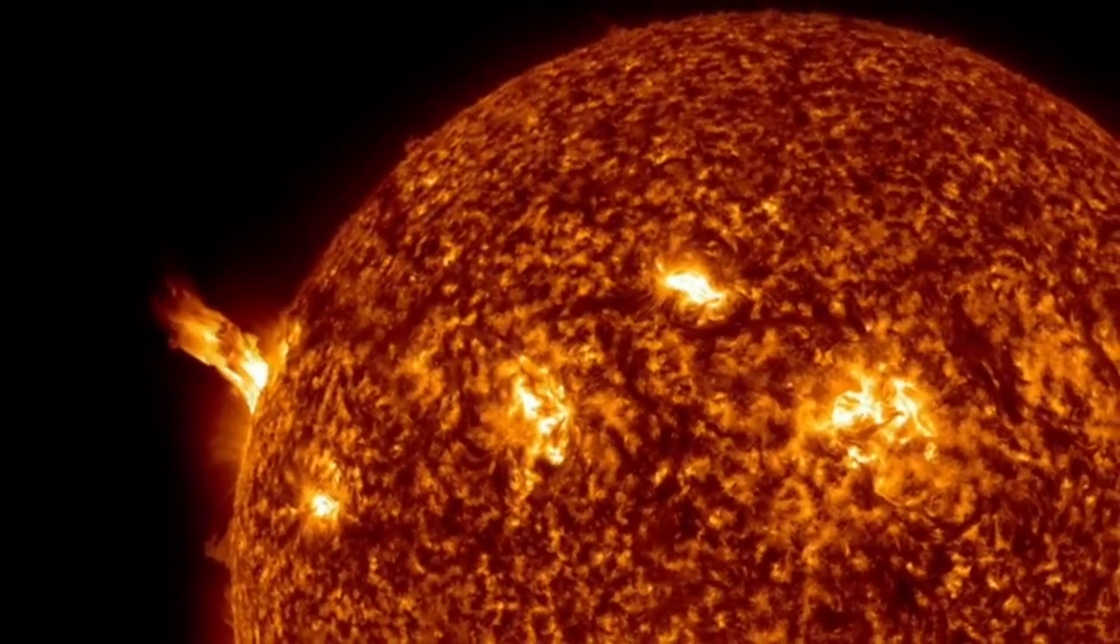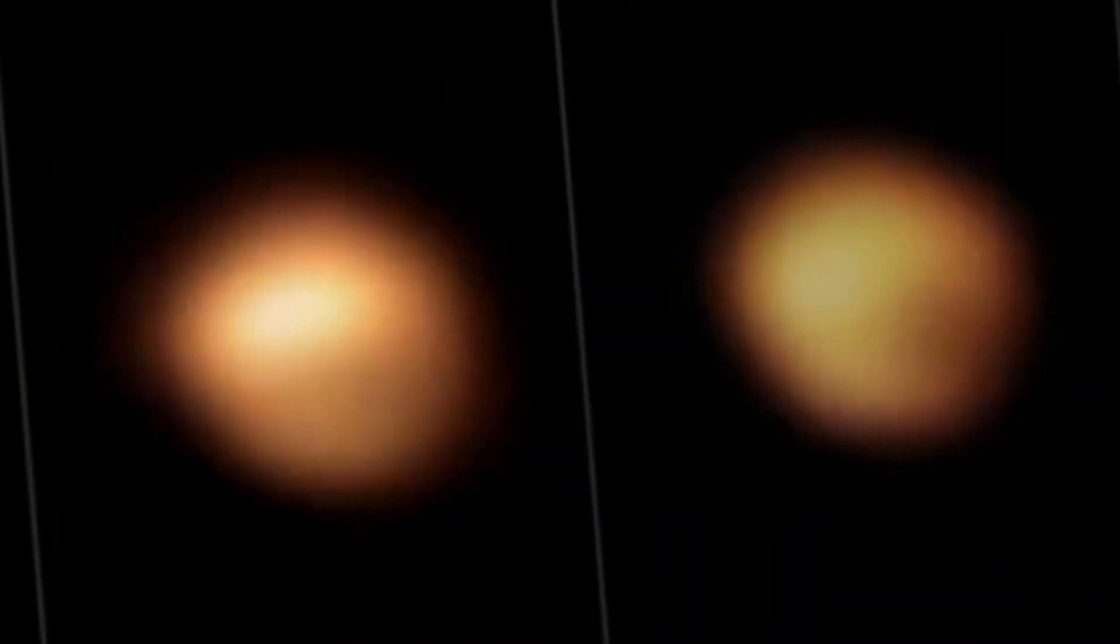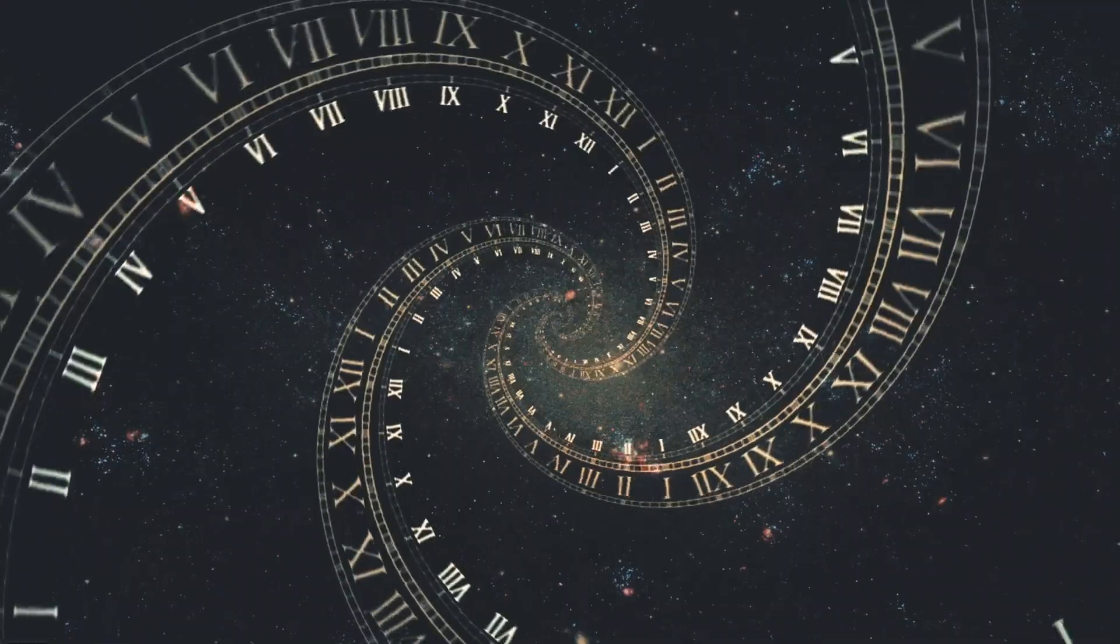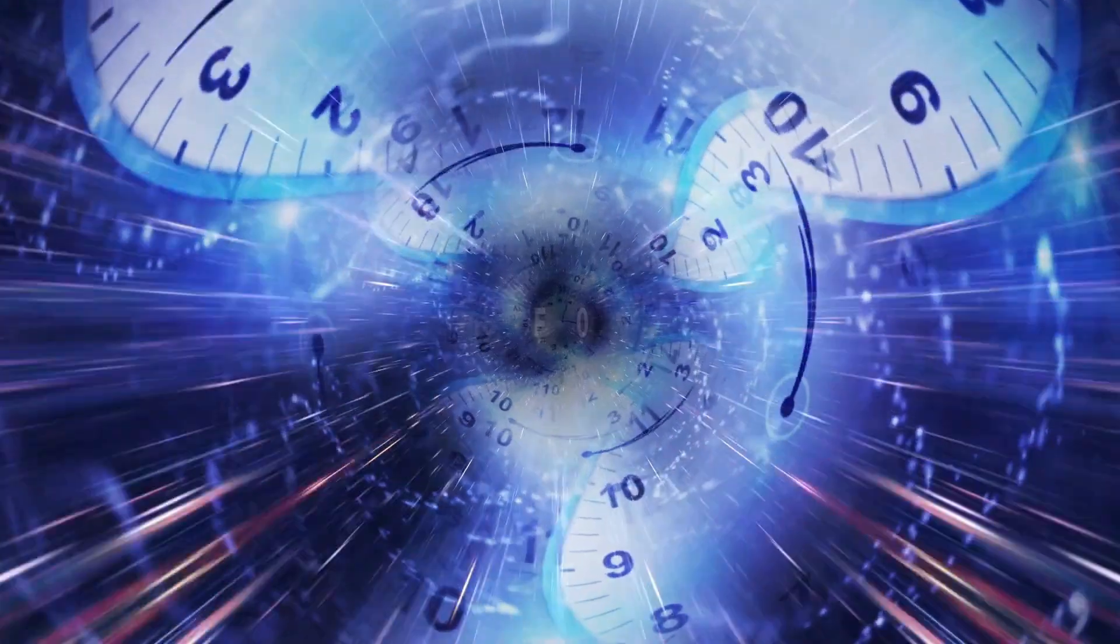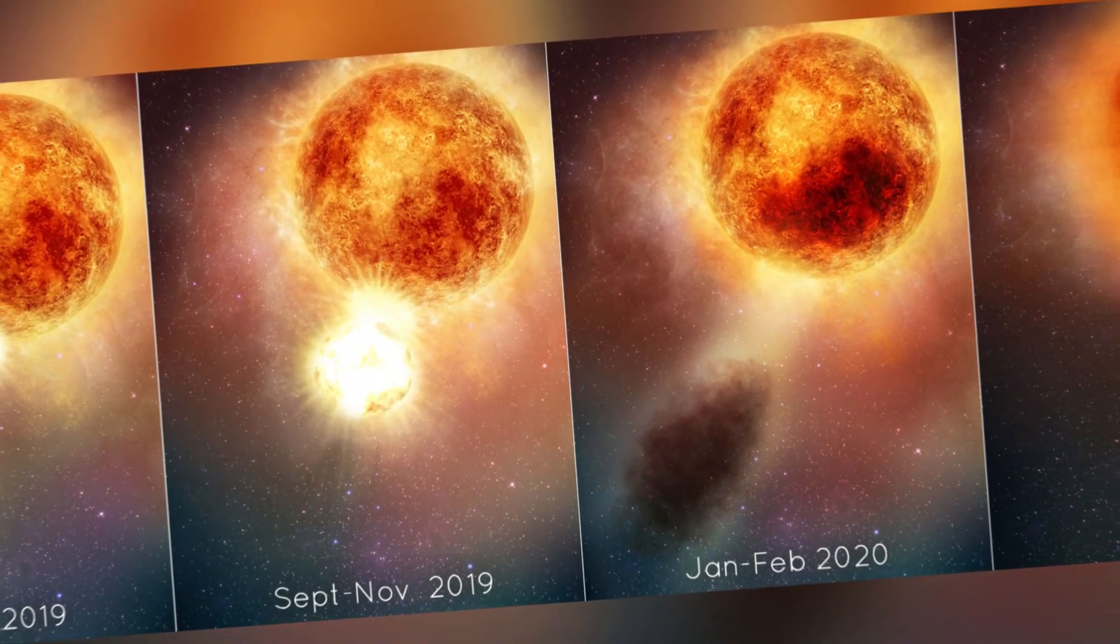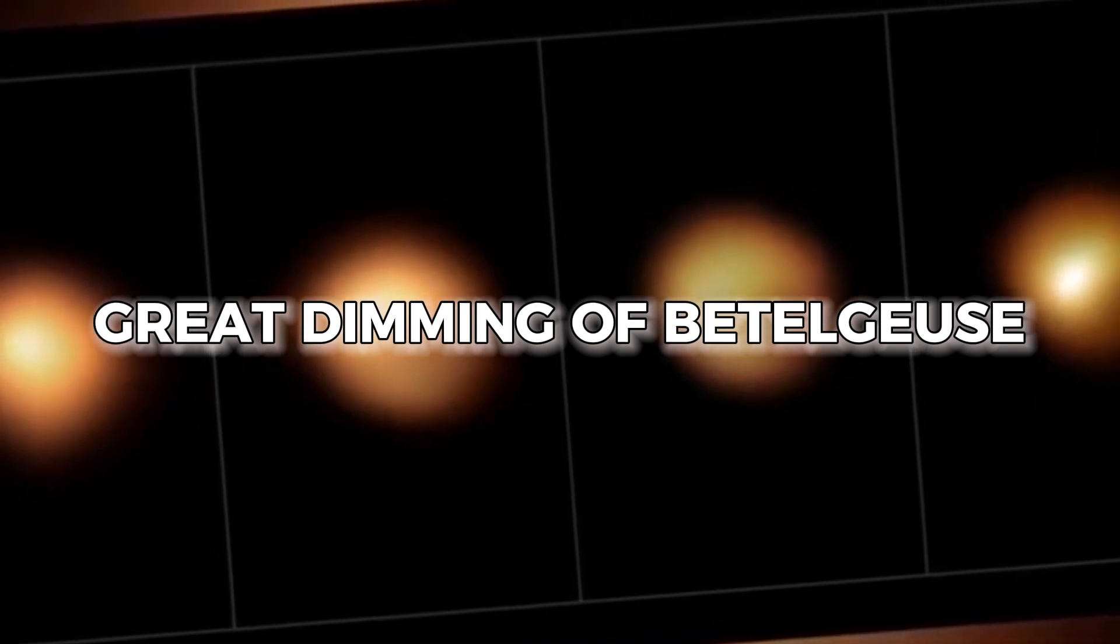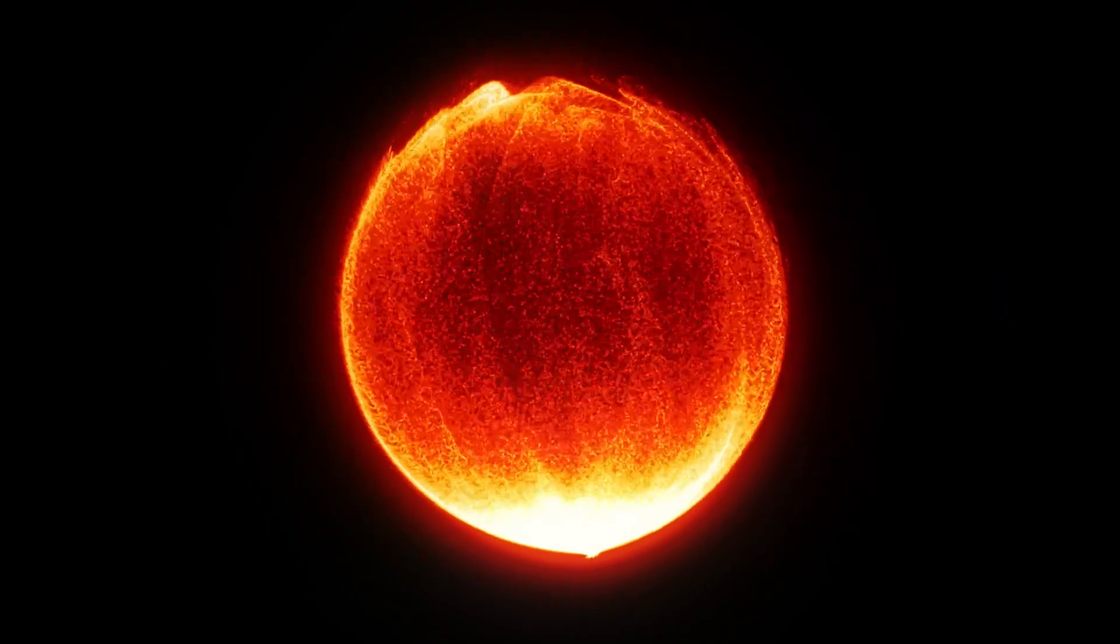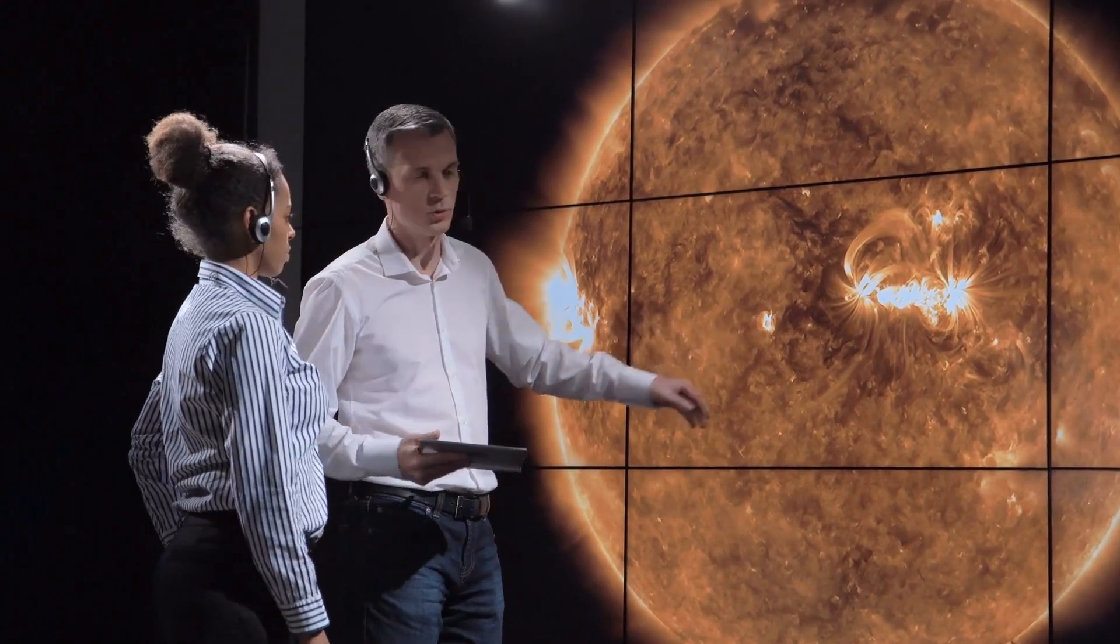Now, let's talk about the drama unfolding on Betelgeuse's surface. Picture this: December 2019, the star suddenly starts to dim, becoming the talk of the town. By February 2020, it hit rock bottom in brightness, marking what we now call the Great Dimming of Betelgeuse. Though it eventually perked up, returning to its usual radiance, astronomers couldn't shake off the mystery.